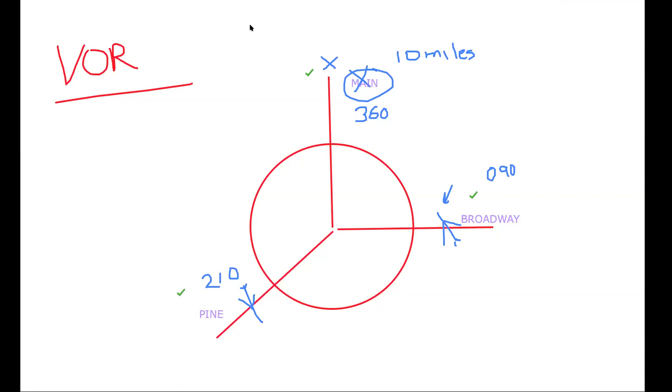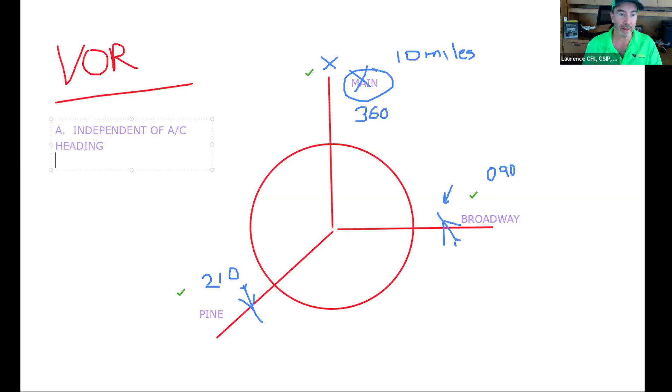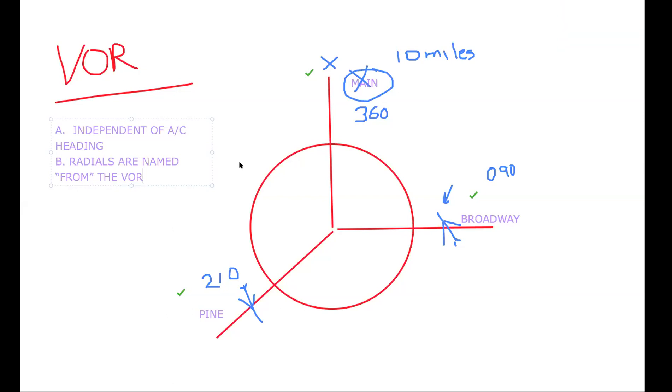So the first thing we should have learned from this is that A, independent of aircraft heading. And B, the radials are named from the VOR center. We'll call it the VOR. It's the center of the VOR. Are we good with that? Yes. Great.